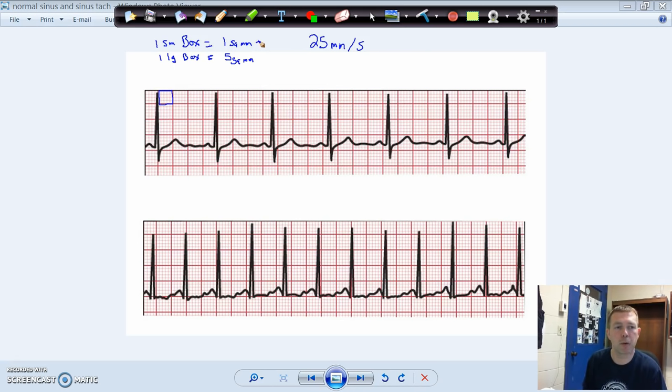One small box or one square millimeter equals 0.04 seconds. So that makes the five square millimeter box 0.2 seconds. So 0.04 seconds in time is one square millimeter. Each five square millimeter box equals 0.2 seconds in time.